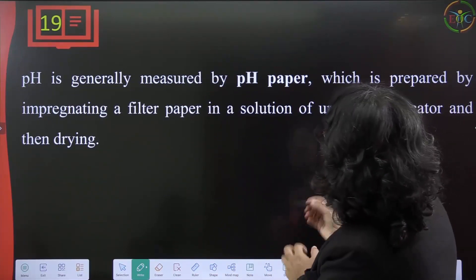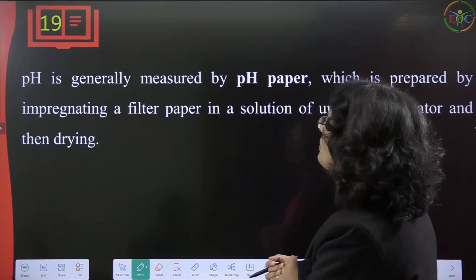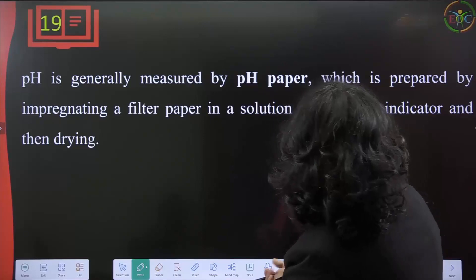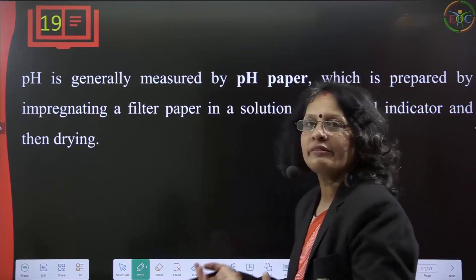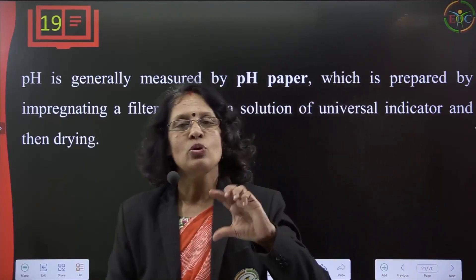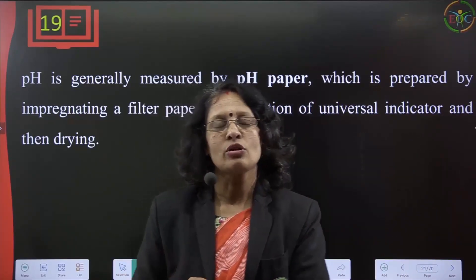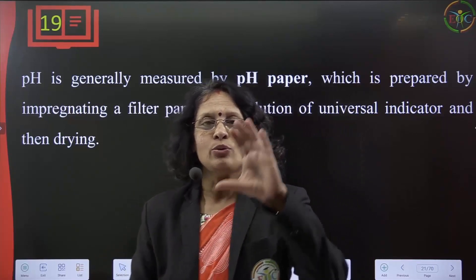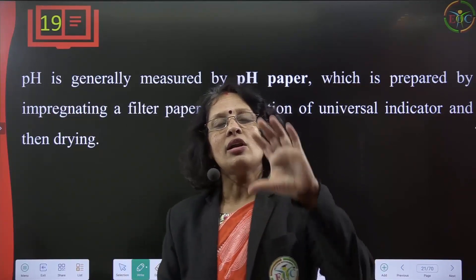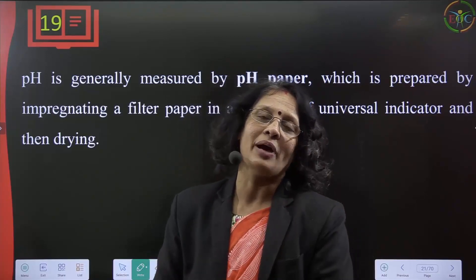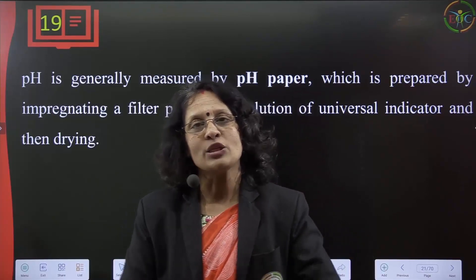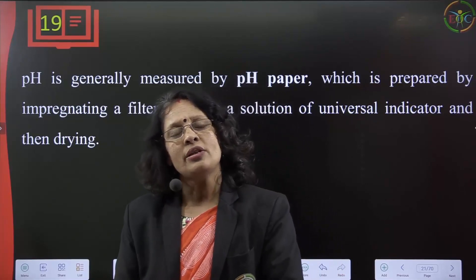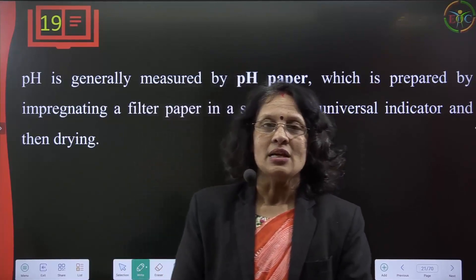pH is generally measured using pH paper, which is prepared by impregnating a filter paper in a solution of a universal indicator and then drying it. The paper appears yellow or white. When dipped in a specific solution, it changes color, which you can match against a color card to determine the pH of the substance.